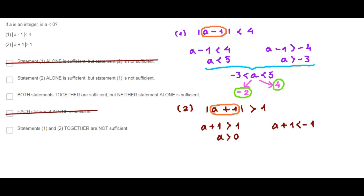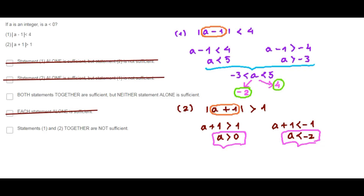Solving for a in the first case, a is greater than 0. Solving for a in the second case, a is less than negative 2. So here a can be positive, and here a is negative. Therefore, we have two different answers — sometimes a is greater than 0, and sometimes a is negative. Statement 2 alone is not sufficient, so choice B is discarded.